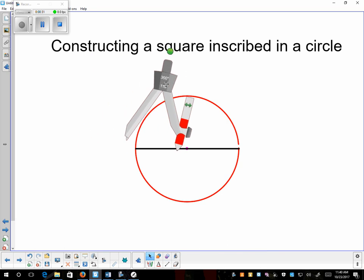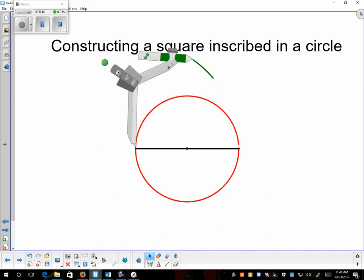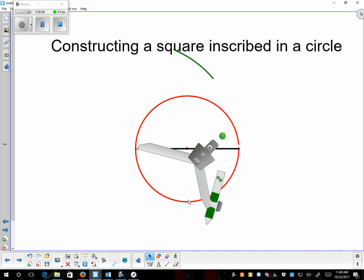And then from there I'm going to find the perpendicular bisector of this circle. Now normally we open up more than halfway, but in this case I like to open up to the entire distance of the diameter. So we swing above and below.